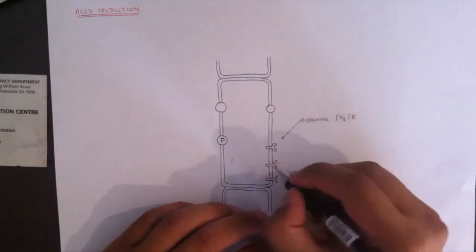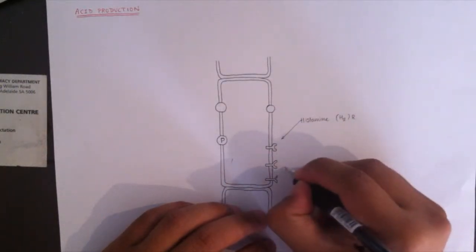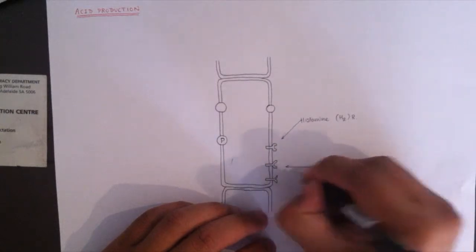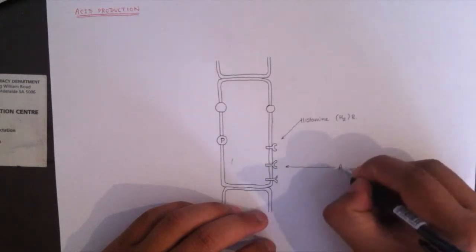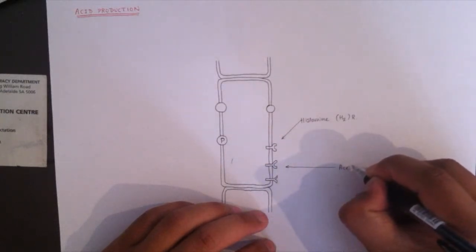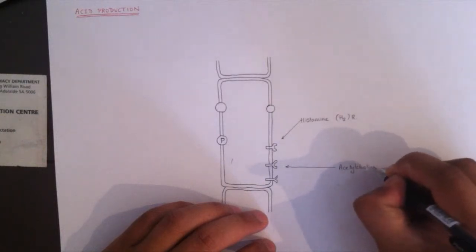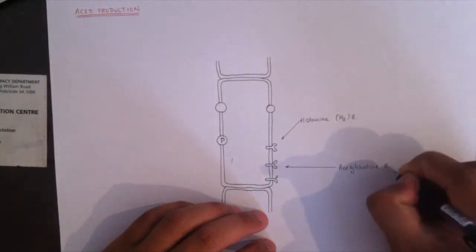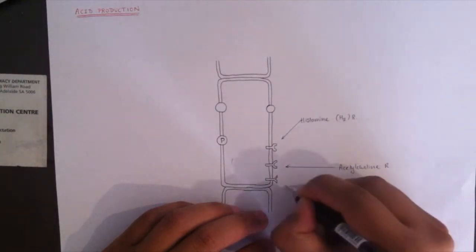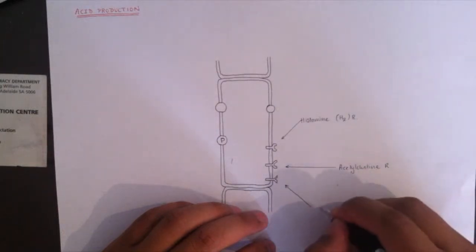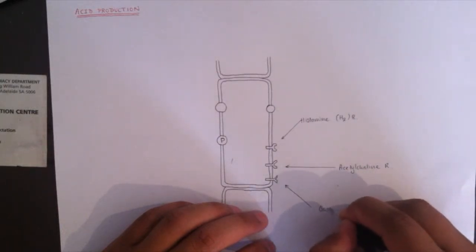And this one is an acetylcholine receptor. And this one is the gastrin receptor.